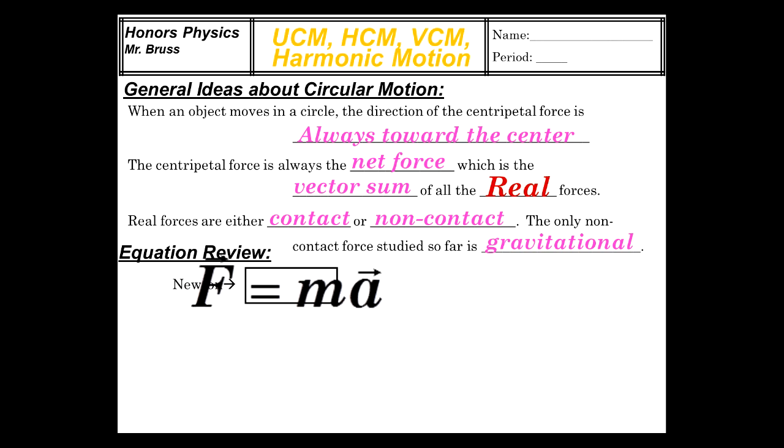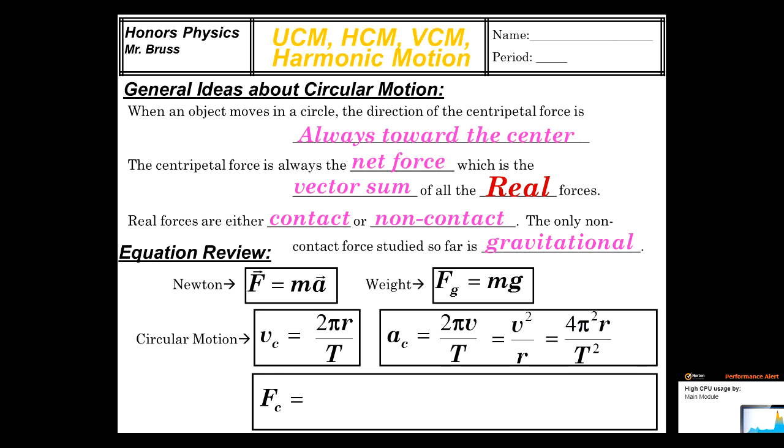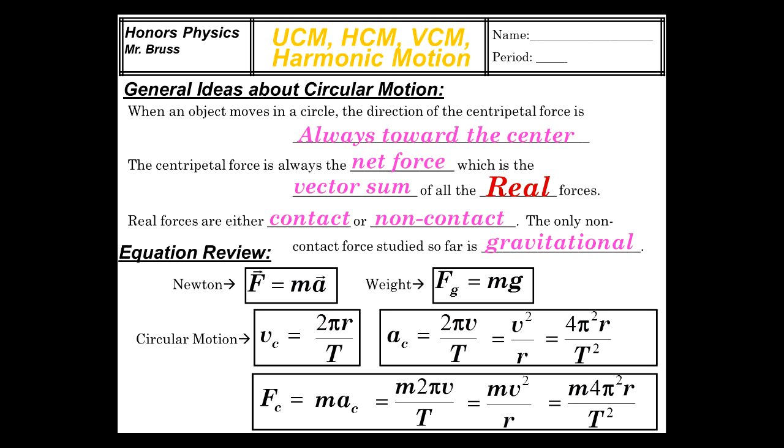Now, the equations we've encountered. Newton, F equals MA, which means sum of F is MA. Correlated with that is weight, which has got the same form. It's mg, g being the acceleration. For circular velocity or circular speed, distance over time, 2 pi r over T. Centripetal acceleration, 2 pi v over T, which is v squared over r, which is 4 pi squared r over T squared. Look familiar? I hope so. And Fc, we just add the m in front of all those. So we get m2 pi v over T, mv squared over r, m4 pi squared r over T squared. And there's the complement of basic equations that we've already learned, and we will move forward with some additional ideas about circular motion.